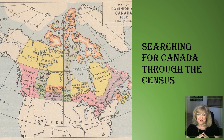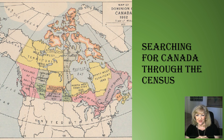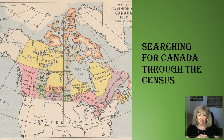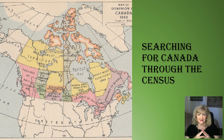Welcome back to How Roots Will Travel. My name is Lisa Elvin Stoltari and we are currently knee-deep in a series called Searching for Canada Through the Census. This is episode 4 and we're going to be looking at the 1881 census and finding out where Canada is really coming into its own. We want to explore that a little bit more and can't wait to share the information on 1881. So let's get started and explore this census.